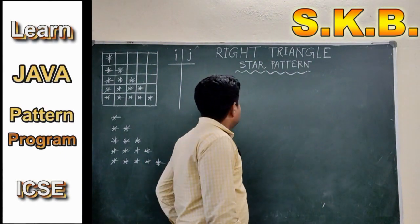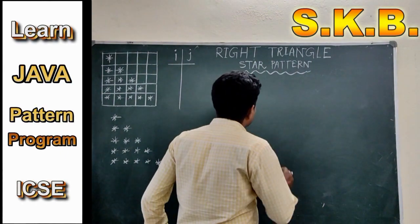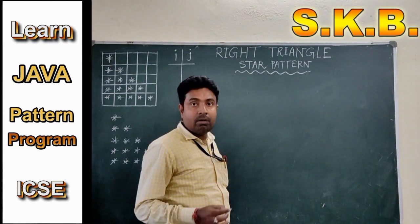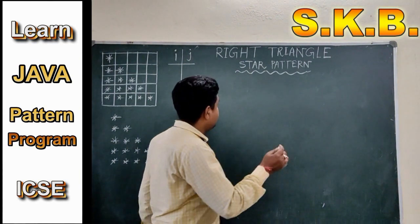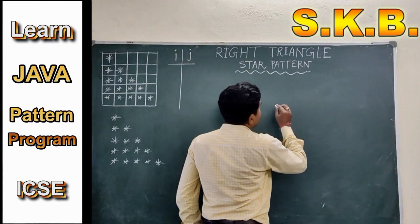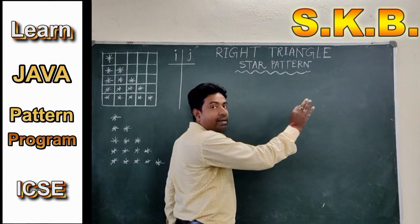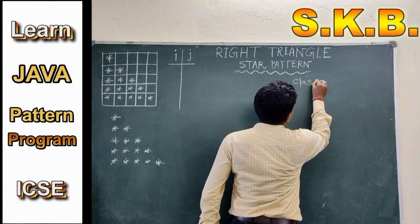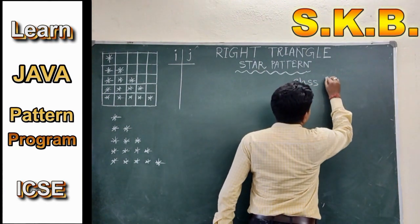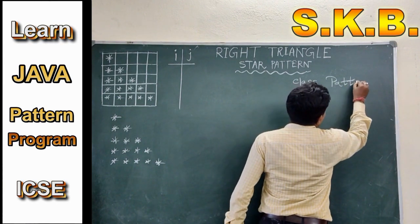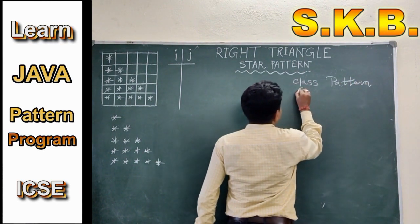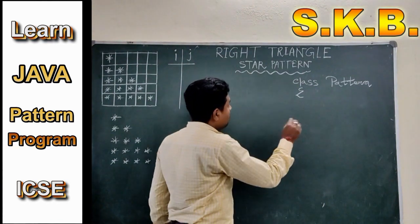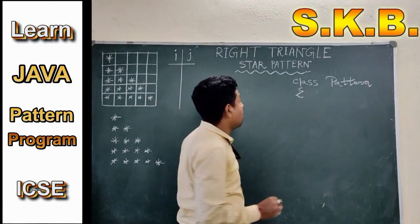Let's start, students. First, as you all know how to declare the class and how to declare the main method in the program. Let's see. First, we have to design and write a class name. I am writing the class name: Pattern. Second bracket open — the class name is Pattern. Now I am going to declare the main method.